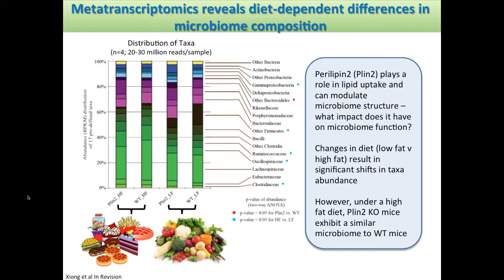I want to go over briefly one vignette we've been working on recently. This is a study looking at a gene called perilipin-2, or PLIN2 — a mouse gene involved in lipid uptake in the gut. Previous studies have shown that a knockout of PLIN2 can modulate microbiome structure. We were interested in understanding: if you do the knockout, what impact does it have on microbiome function?